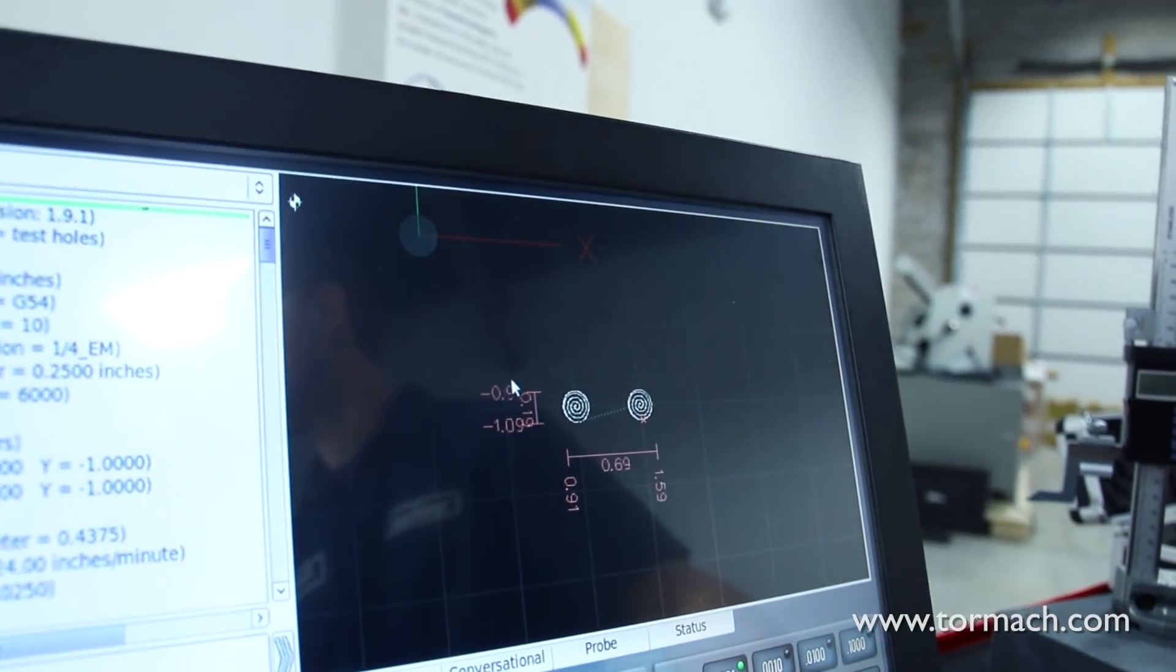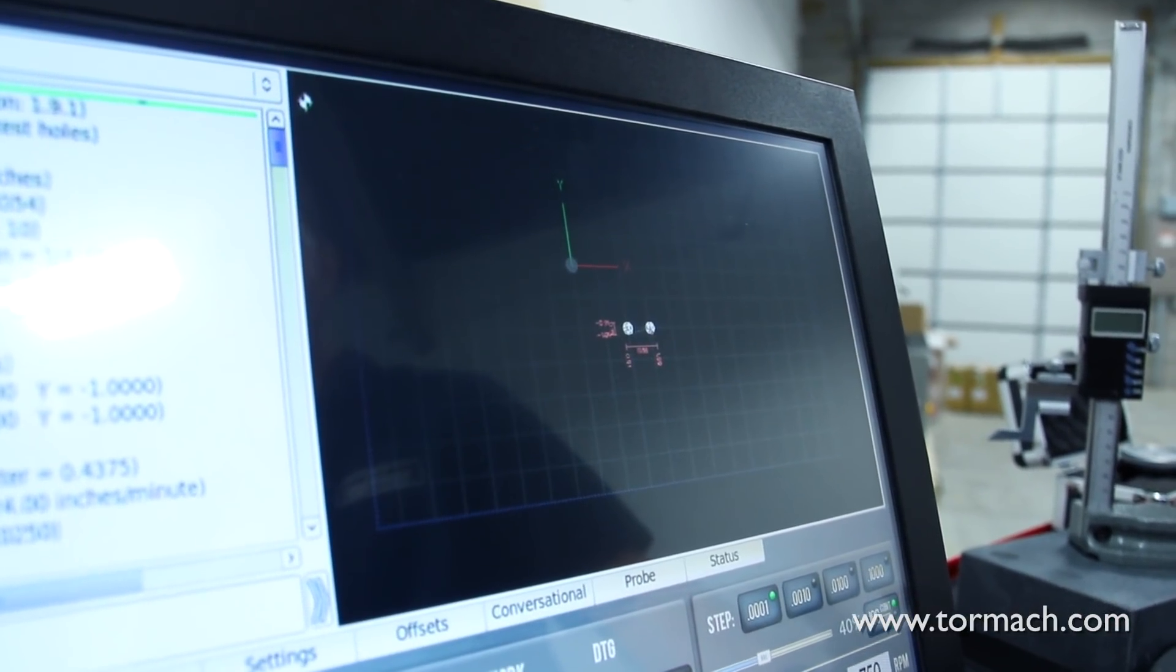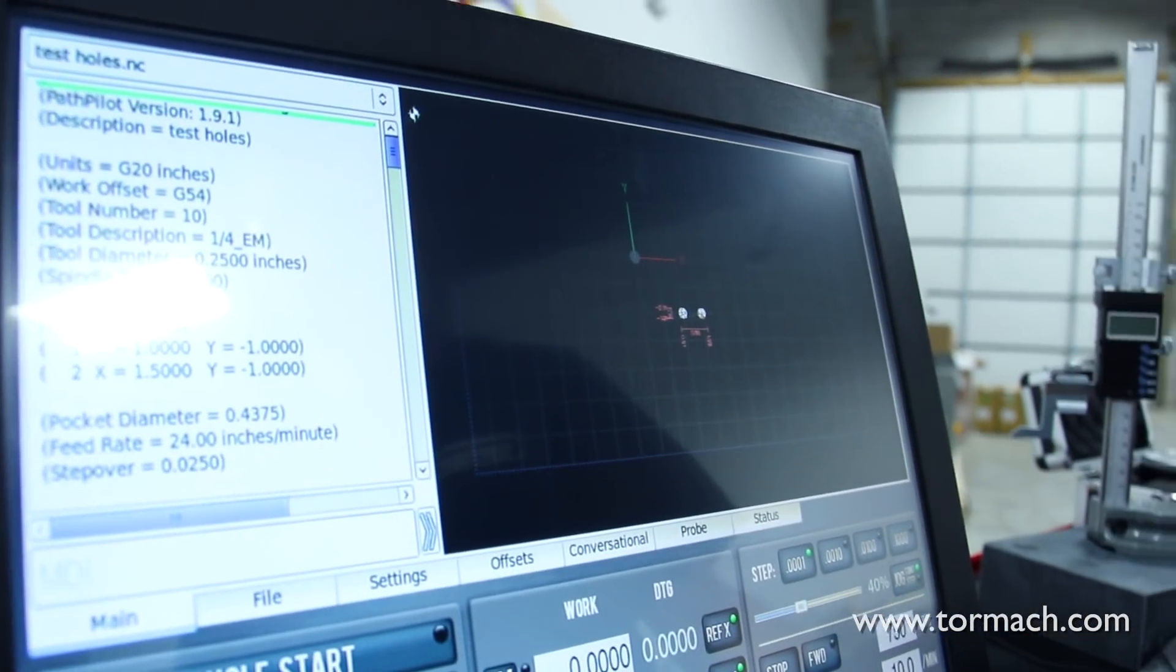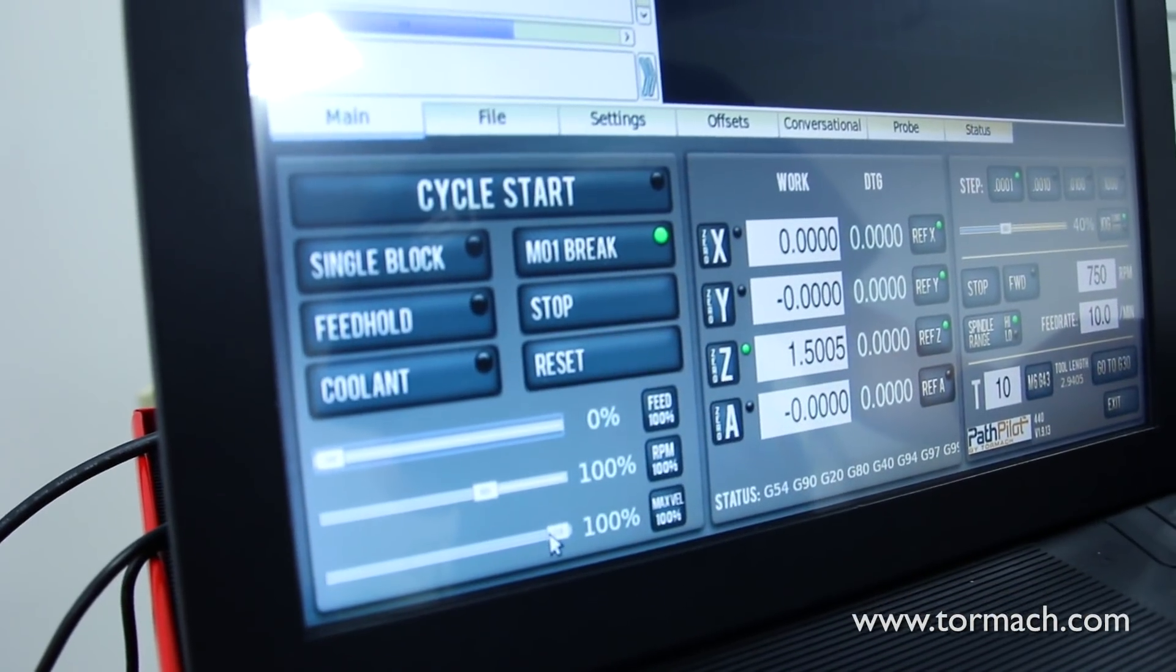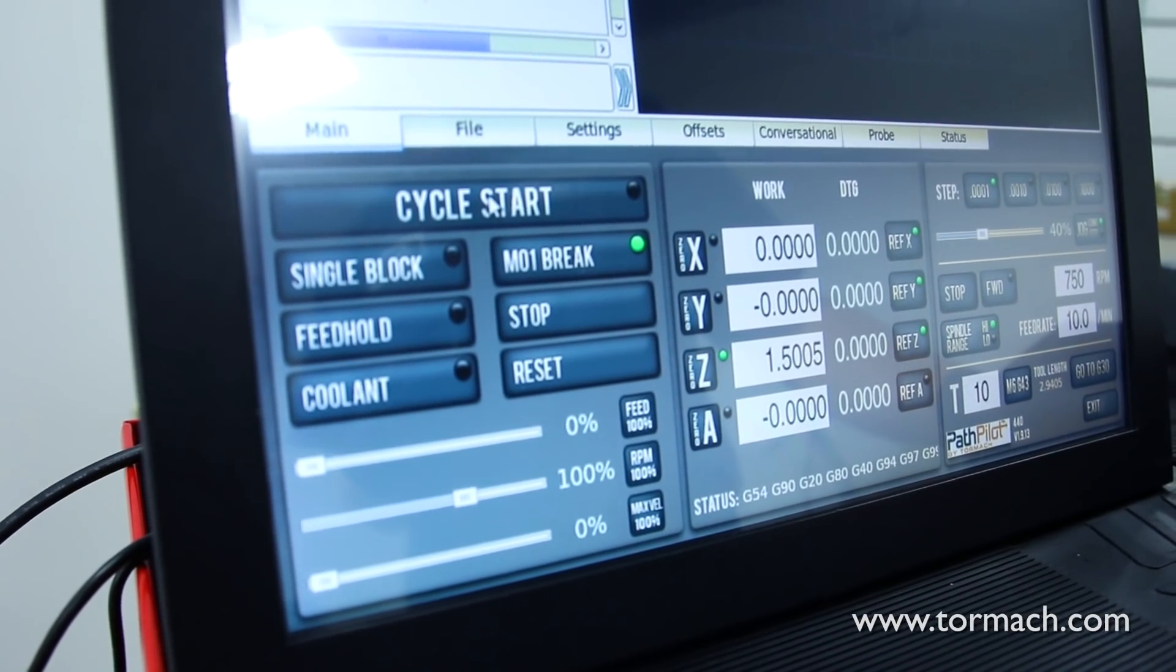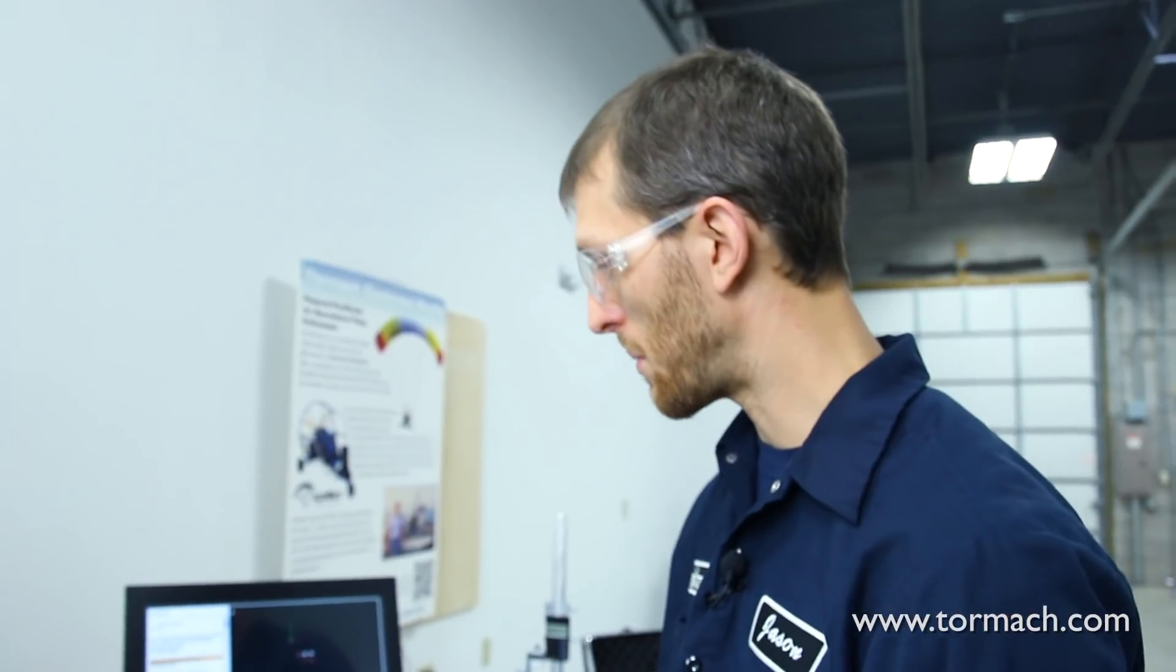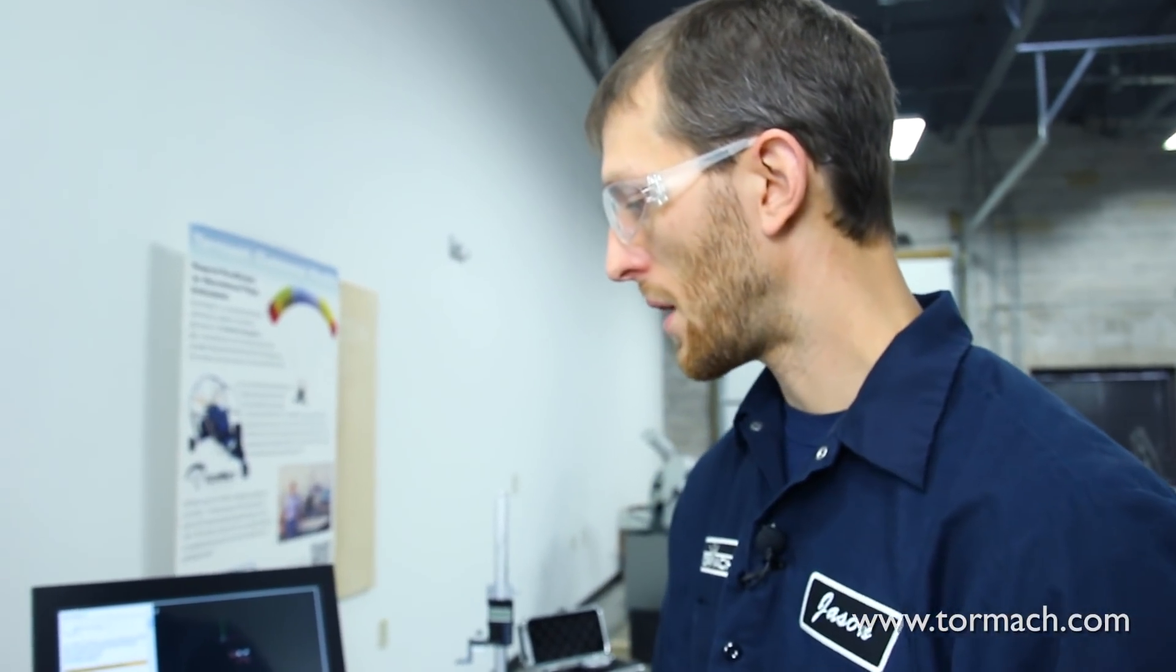I'm going to go back to the top view so I can see where my part is relative to my machine coordinates. Anytime I run a program, you'll always notice I turn my feed rate down to zero and my max velocity down to zero, and then I press cycle start.